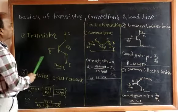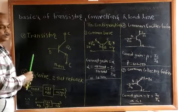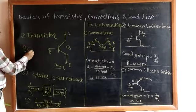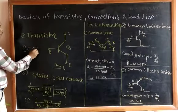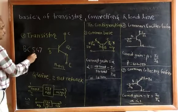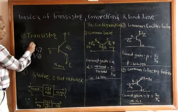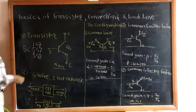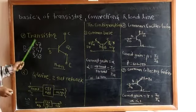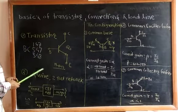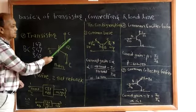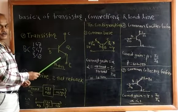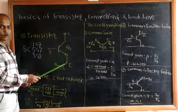For low power transistors, for example, we are using transistors BC547, BC548, and BC147. These are low power transistors. Low power means their physical size is very small and their current carrying capacity is very low.